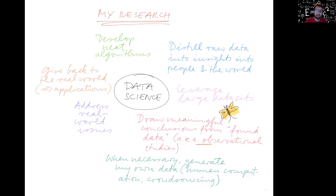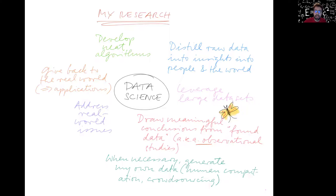So this is Bob West's view of data science, going clockwise in the circle. The general theme in my lab is we distill raw data into meaningful insights — insights into people and into the world. To do that, we leverage large data sets. The butterfly you see on the screen symbolizes the warm fuzzy feeling I get when I have a nice juicy data set at my hands.